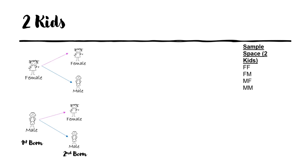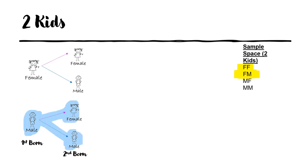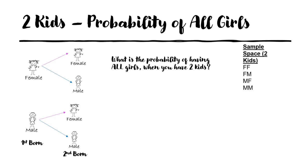Now what about two kids? We're starting to see the branching happening. You have your first kid and it's a female — then from there you could have another female or a male, giving you female-female and female-male. You could also start with a male and then have a female or a male. So what's the probability of having all girls with two kids? Just the top one — one out of four possible choices, which is 0.25 or 25%.